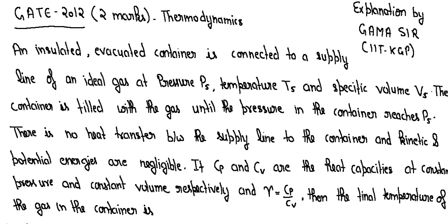The question is from GATE 2012, two marks, thermodynamics. An insulated evacuated container is connected to a supply line of an ideal gas at pressure PS, temperature TS and specific volume VS.